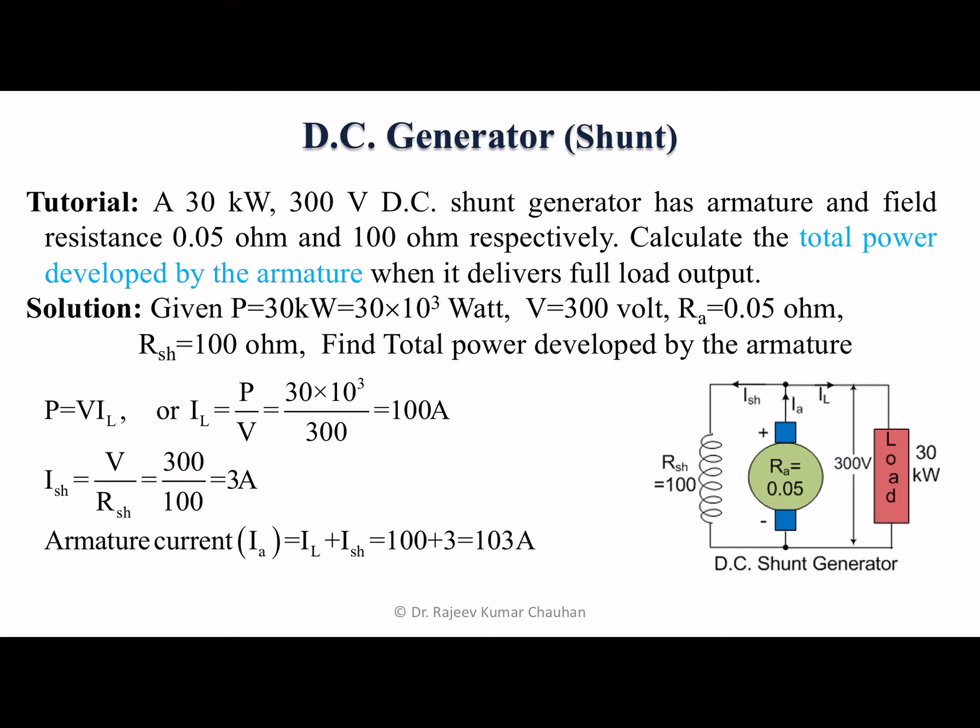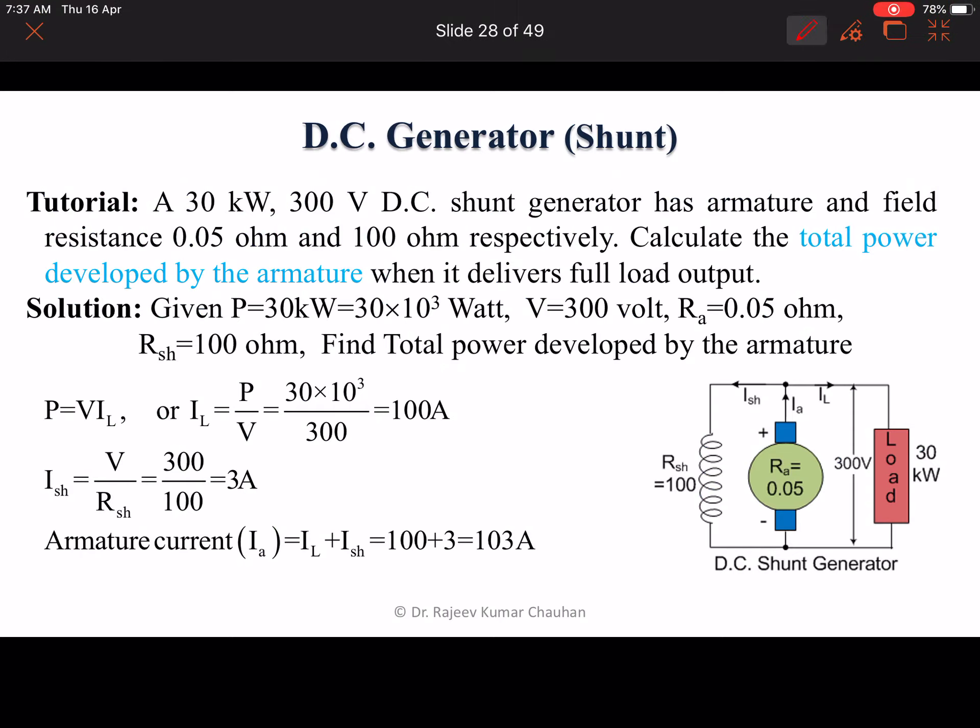Given: P equals 30 kilowatt or 30 times 10 to the power 3 watt, V equals 300 volt, RA equals 0.05 ohm, Rsh equals 100 ohm. Find the total power developed by the armature.